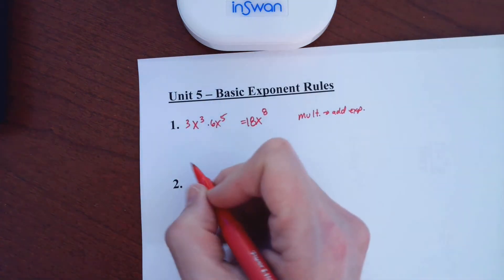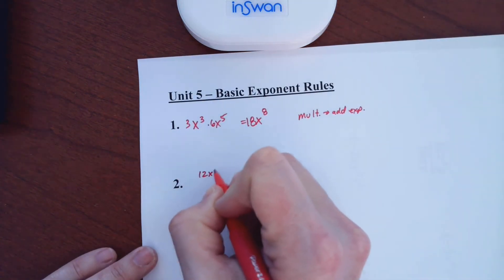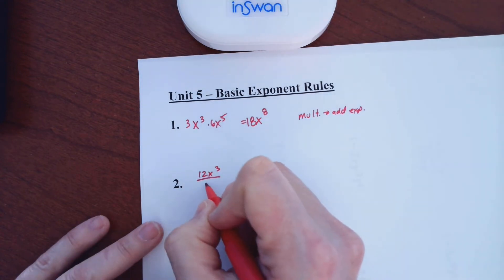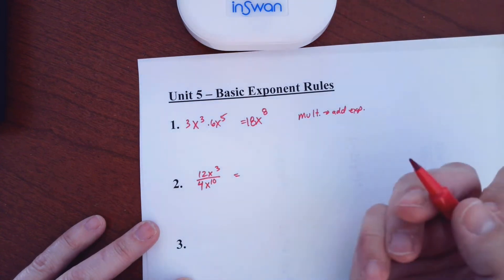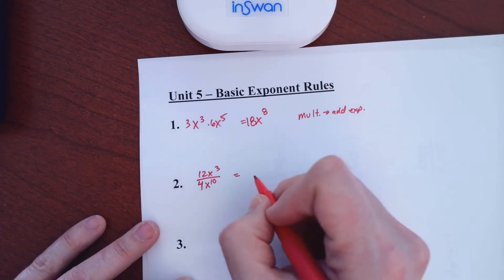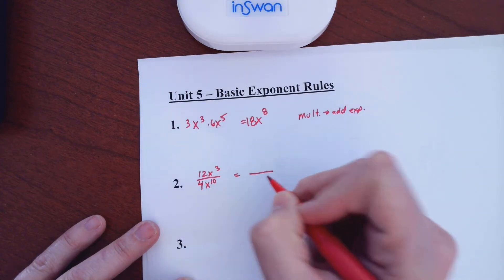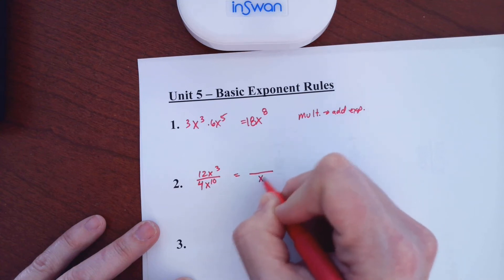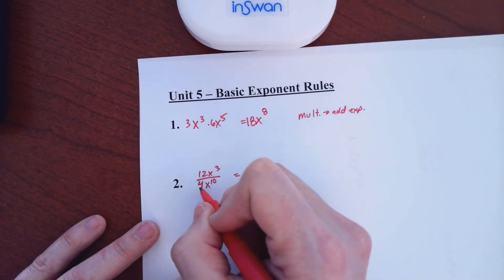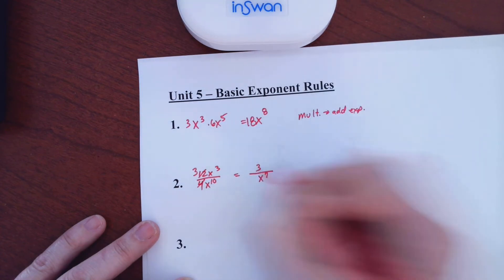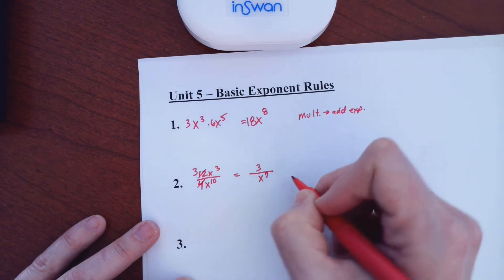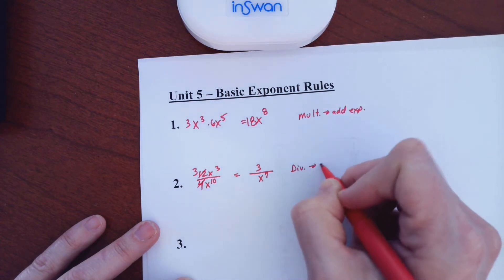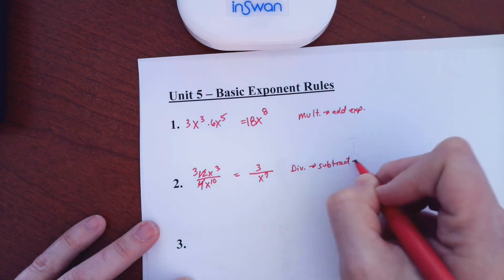Then the next one, let's say you had 12x to the third over 4x to the tenth. When you divide, you subtract exponents. Well, 3 minus 10 is negative 7. You can see there's more down here, so that means if it gives you negative 7, that means there's going to be 7x's left on the bottom, x to the seventh. 12 divided by 4, this cancels out to a 3. So basically all these get canceled with 3 of those, leaving you 7. The general rule here is division means to subtract exponents.